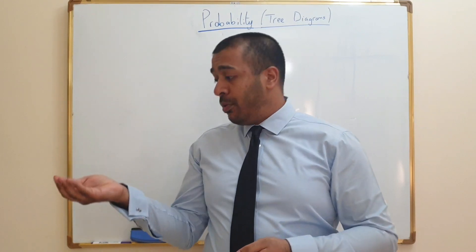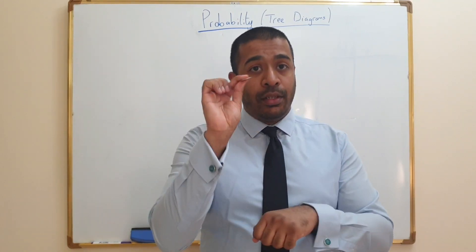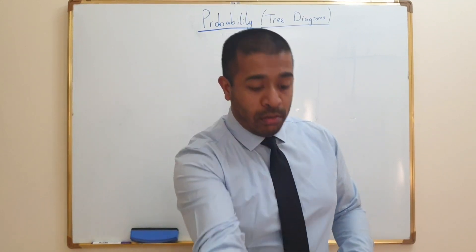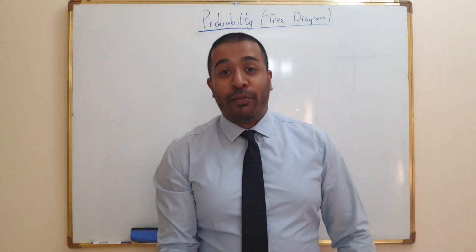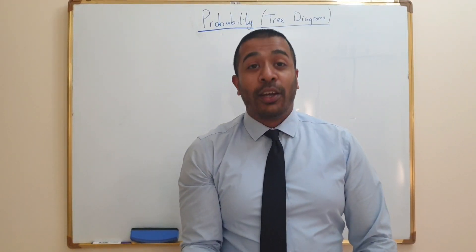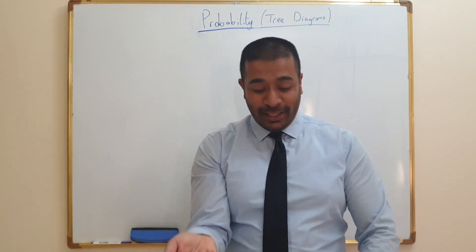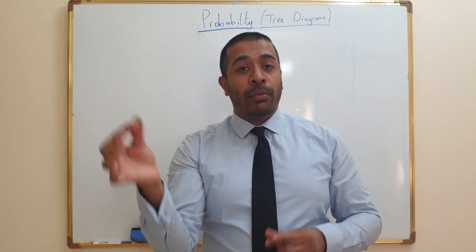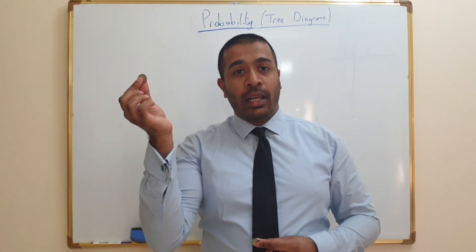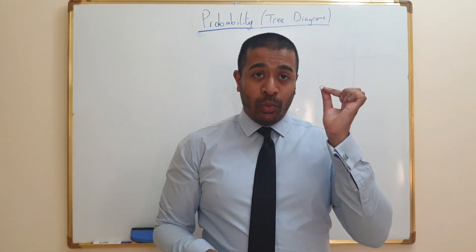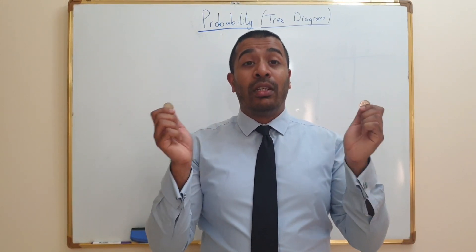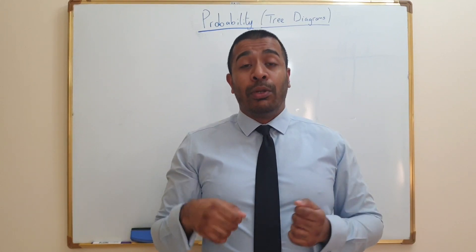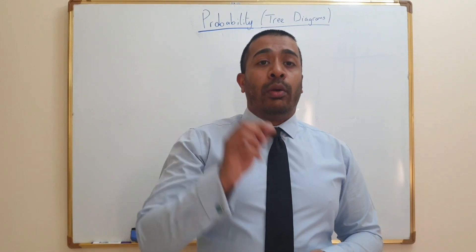So let's flip coin number one — it's a heads. Now I'm going to flip coin number two — that's tails. Whatever answer I get with this coin does not affect the answer I get with this coin. So therefore these are two separate events, two separate outcomes — in technical terms, we call them two independent events.